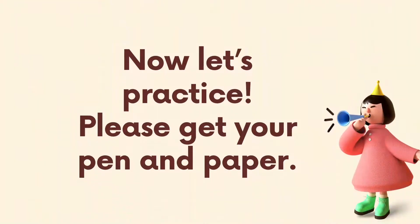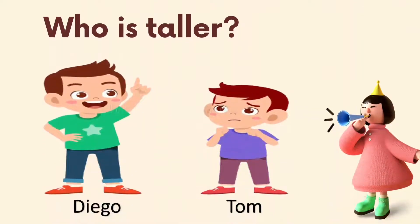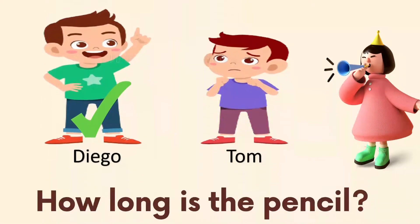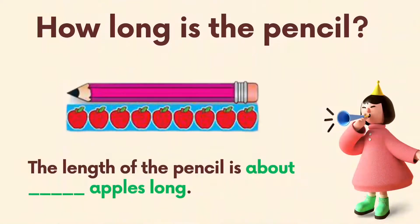Now let's practice — please get your pen and paper. Who is taller, Diego or Tom? Diego is taller than Tom. How long is the pencil? The length of the pencil is about nine apples long.